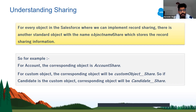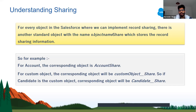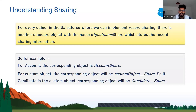For every object in Salesforce where you can implement record sharing, there is a complementary standard object whose name is the object name appended by the word 'Share'. This share object contains all the record sharing information. For example, for the Account object there's an AccountShare object. For a custom object called Candidate, the corresponding share object would be Candidate__Share.